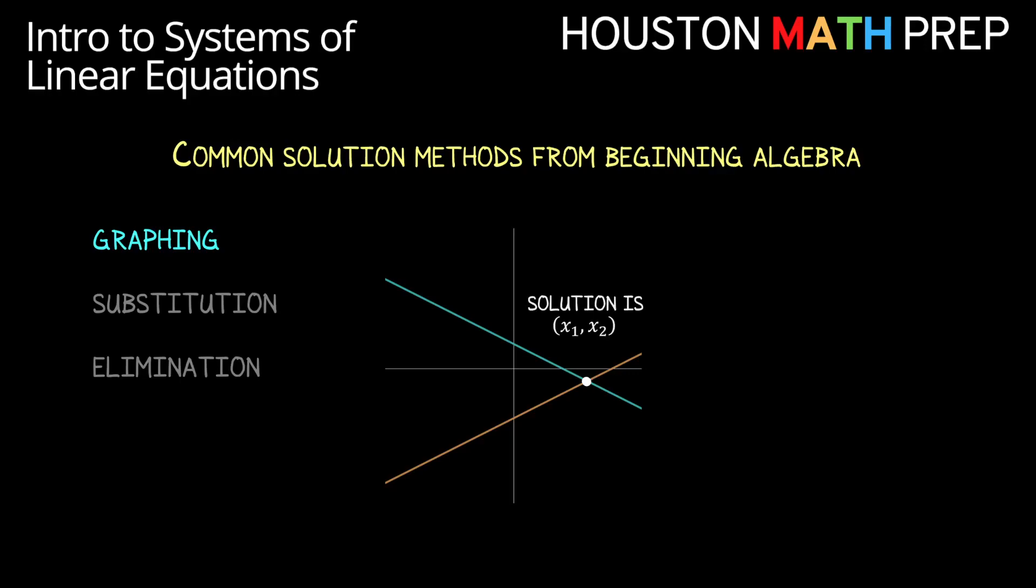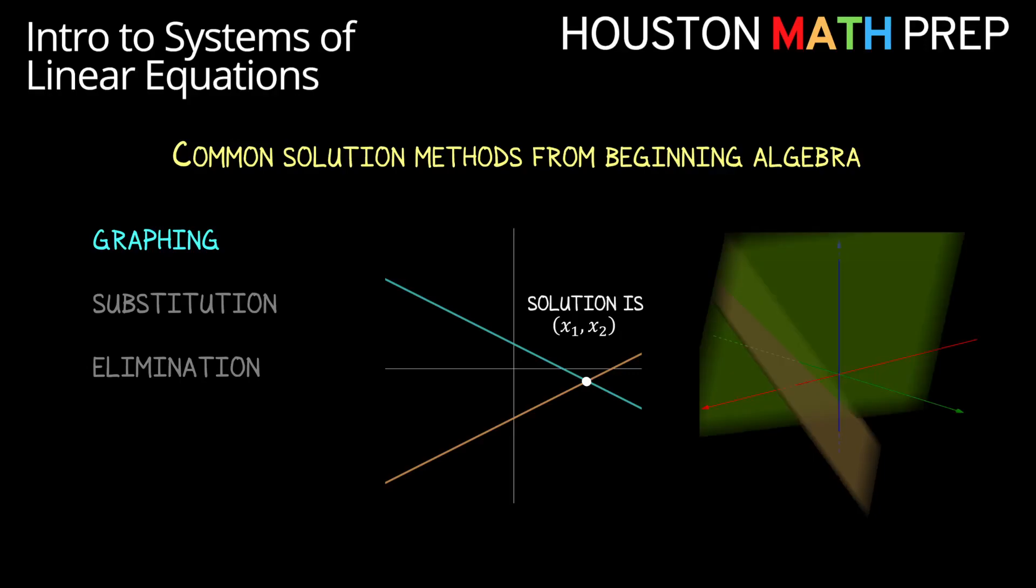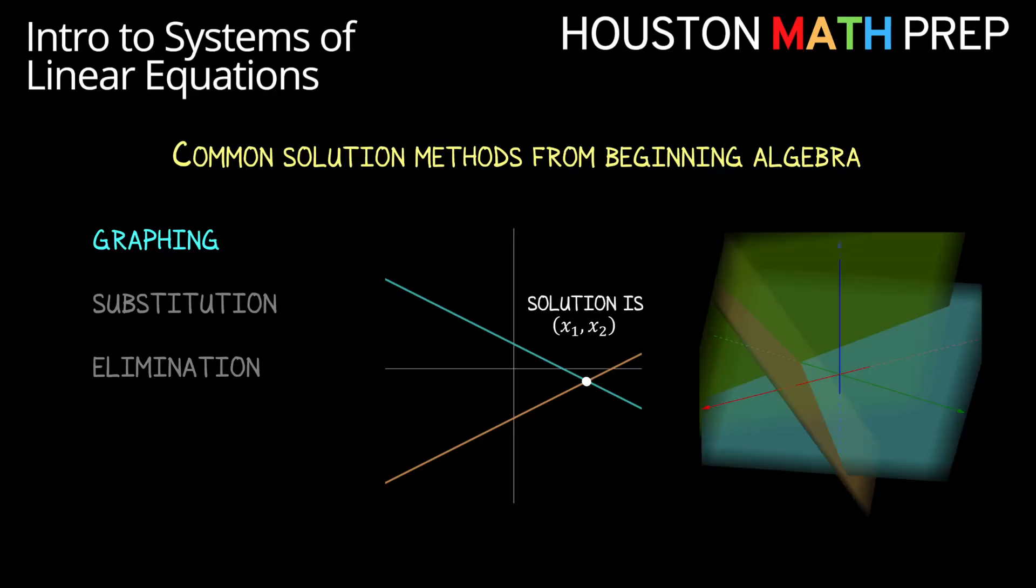If we have three variables, then to graph the system each variable needs its own axis, and so now our flat graph in three-dimensional space is a plane. Assuming that we have three equations to go with our three variables, we can graph the second equation and then the third, and if those planes all intersect at a particular point, then we get our solution for x1, x2, and x3 as a point in 3D space.